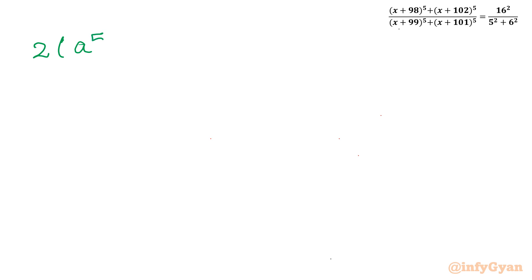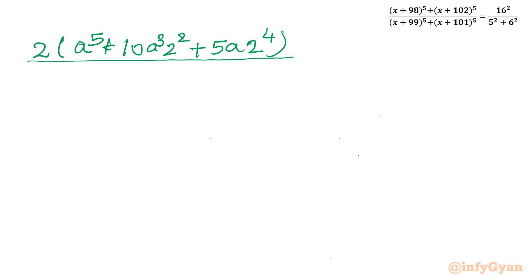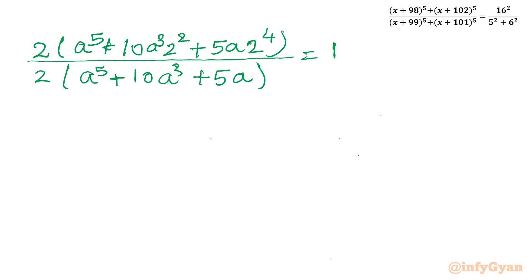So our equation becomes: 2(a^5 + 10·a³·4 + 5·a·16) over 2(a^5 + 10a³ + 5a) = 256/61. The factor of 2 cancels from numerator and denominator. We can also see that a is common in the numerator.